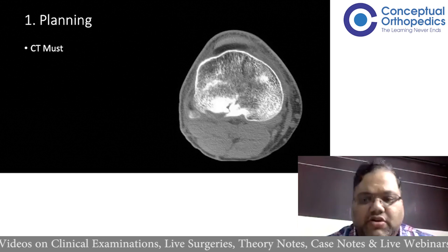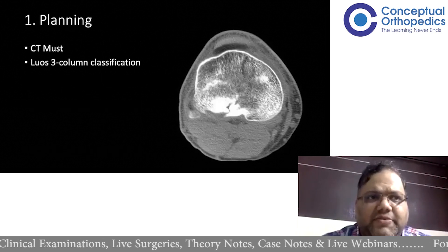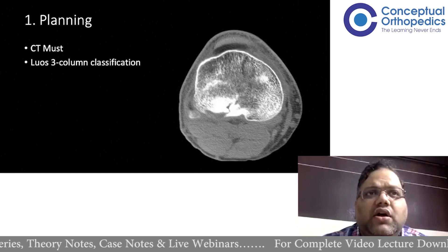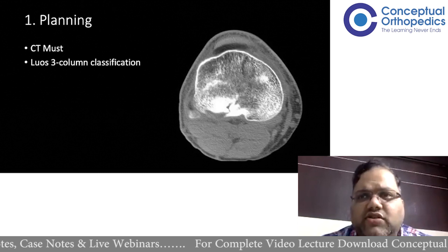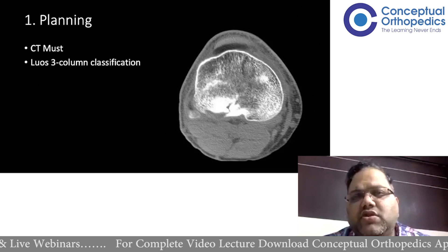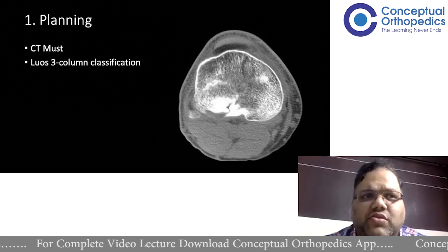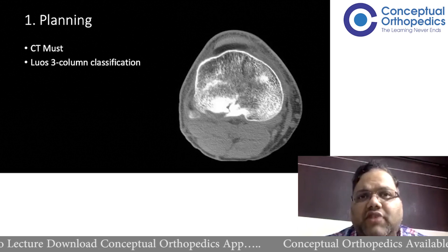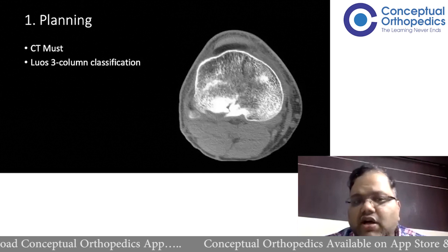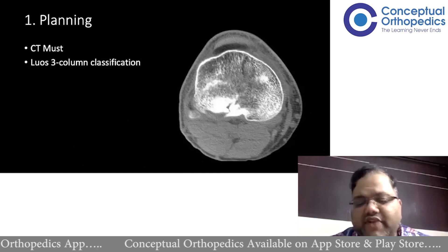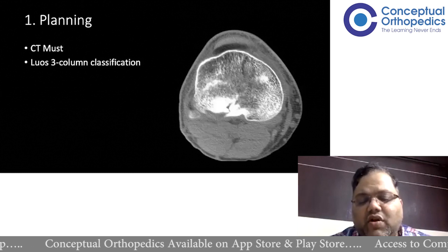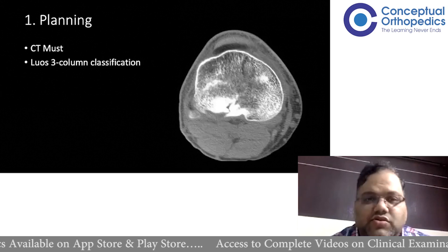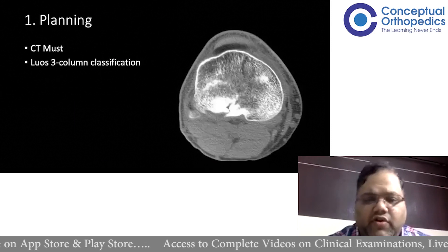We'll start our planning only once a CT is done. Schatzker's classification is the most commonly used and asked in exams, but the old Schatzker's classification only told us whether a fracture requires a screw or a plate. The working classification most of us fall back on is the Luo three-column classification, because it makes understanding fractures so easy — once you identify which columns are injured, it becomes very simple and practical to decide the approach and plating strategy.